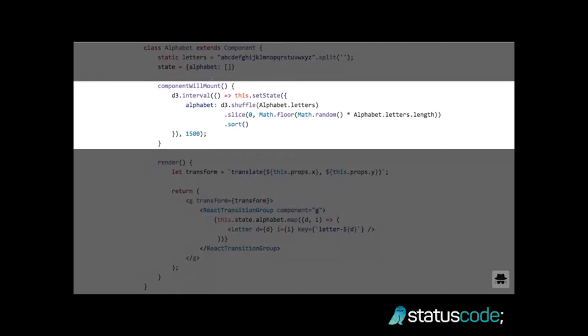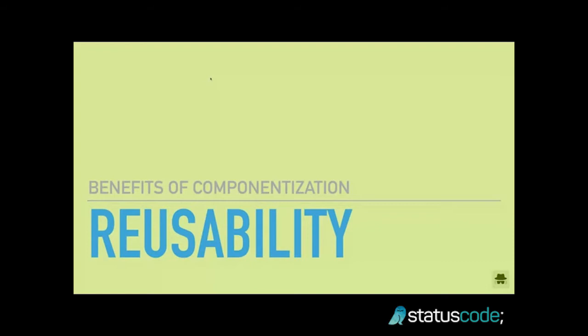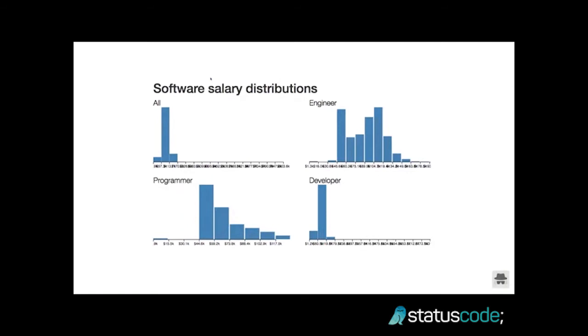From that, we come to reusability. You have a letter component that you just reuse multiple times with different properties and it renders different letters. Take, for instance, this visualization of four different salary distributions based on job type. The data set is from H1B visas. What's important is that you have four different histograms rendered on the same page — they show different data, different axes, different everything.